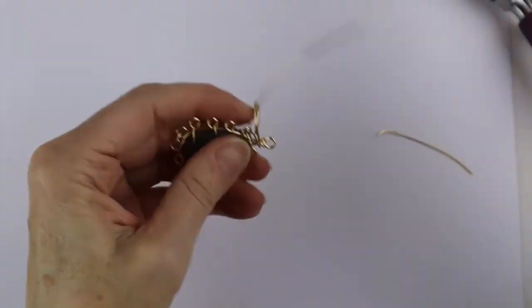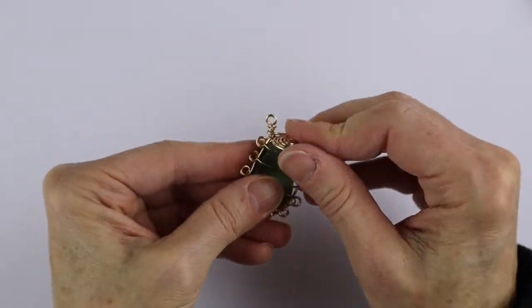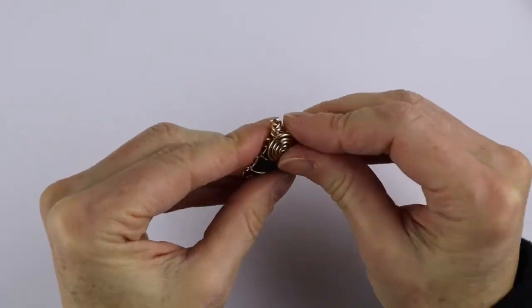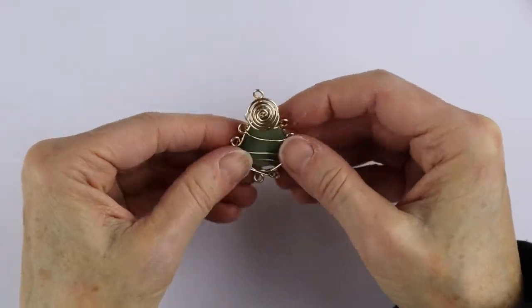Then you just want to wind it around and clip the end like that. And then once you've got it in there, you push your spiral down, fit it in place, do any little last minute adjustments, push it up a little bit if you want, and flatten it out a bit, and there you have your pendant.